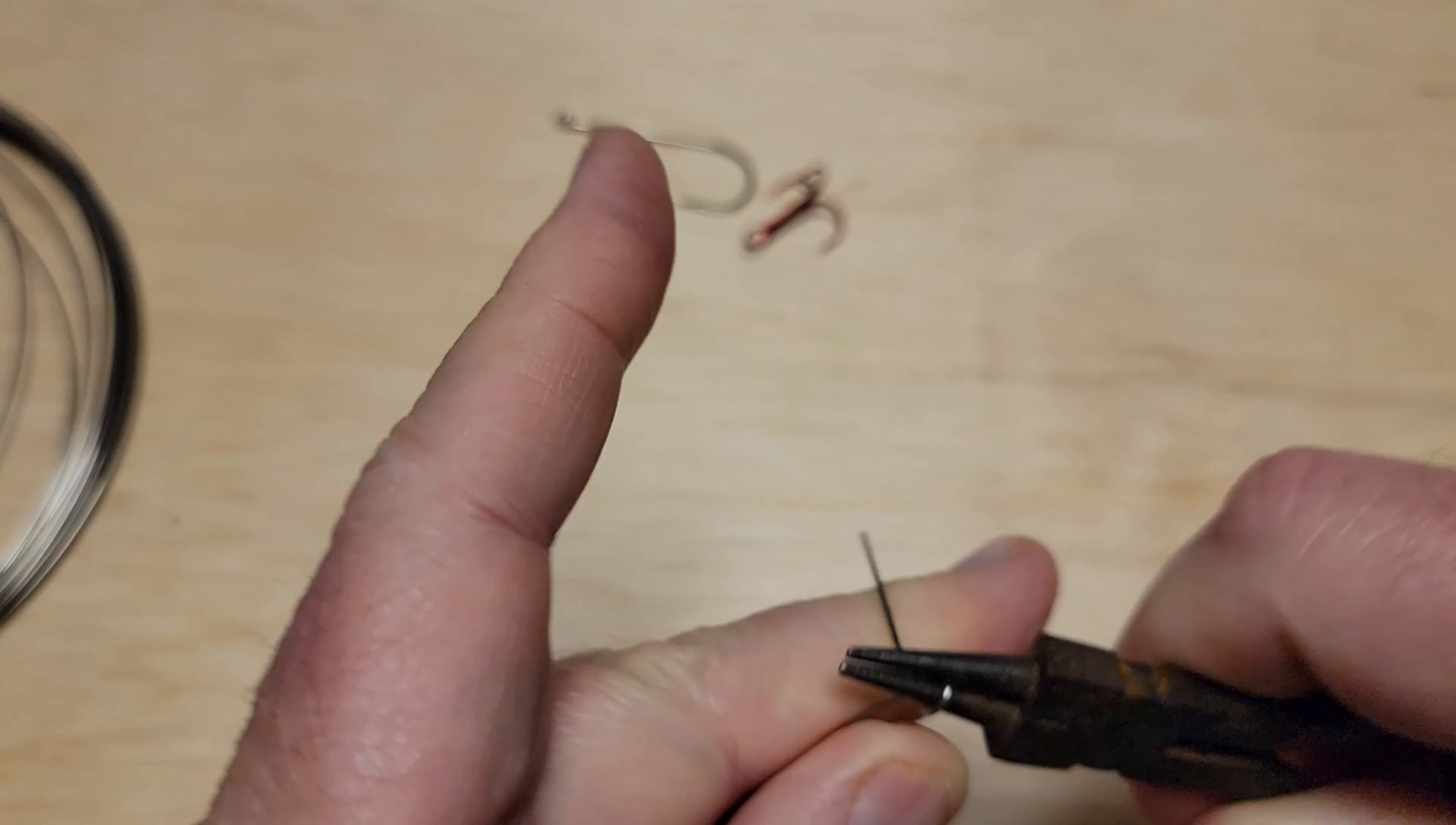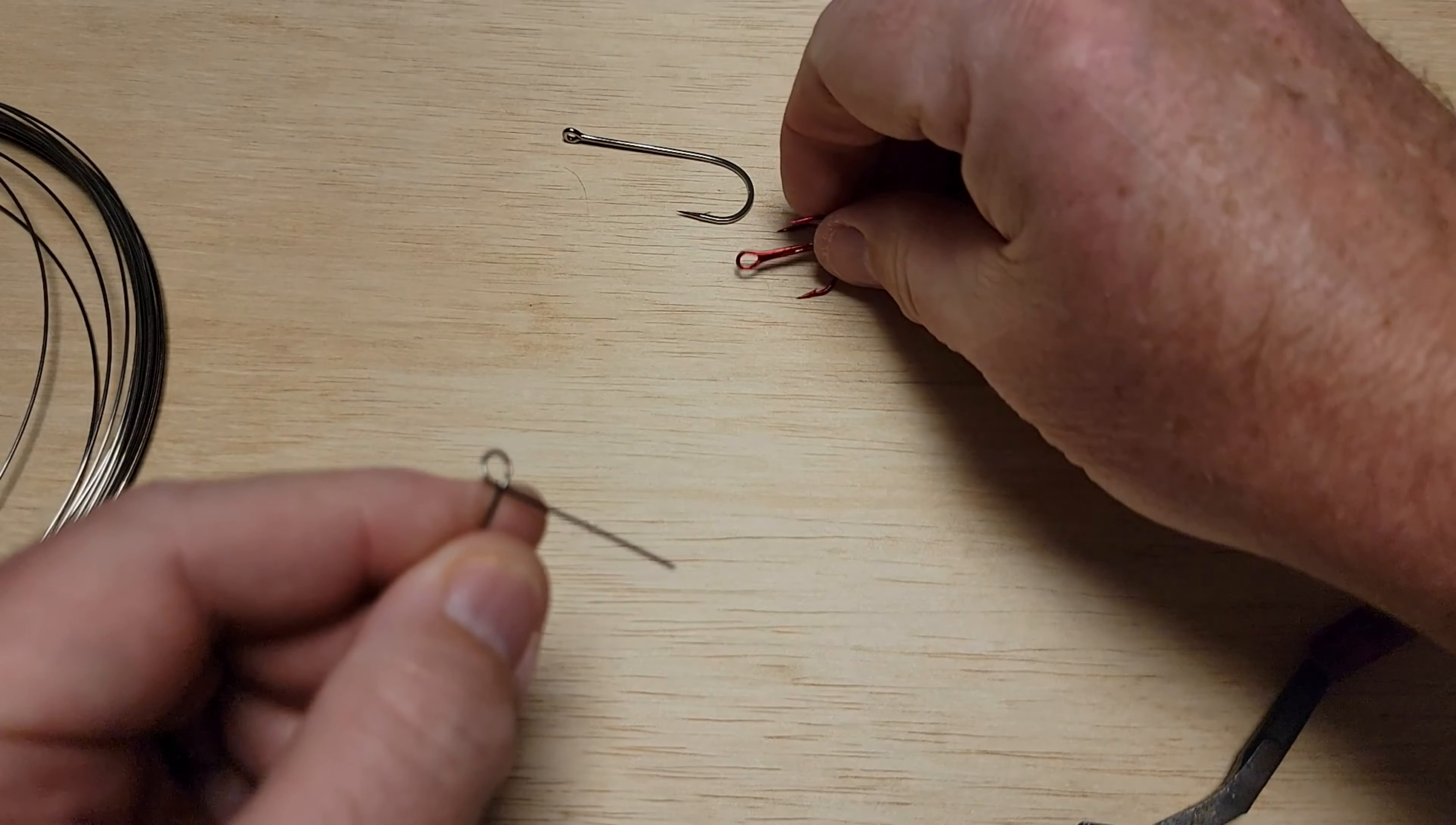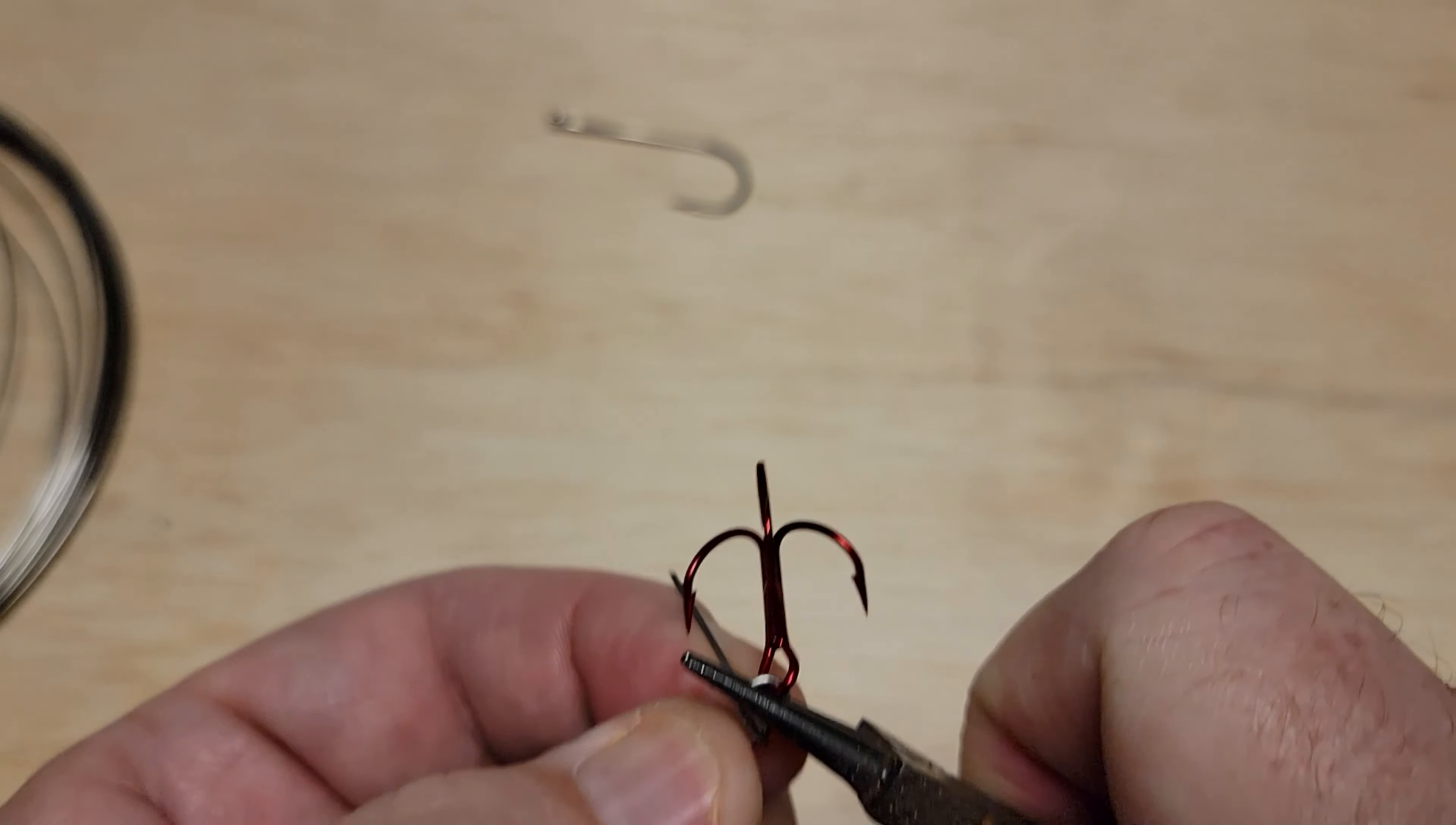What I'm going to do is just make a round loop there. You can take your pliers here, bend it just a hair open, and you just get your hook in there. Hold right here and then do your twist.